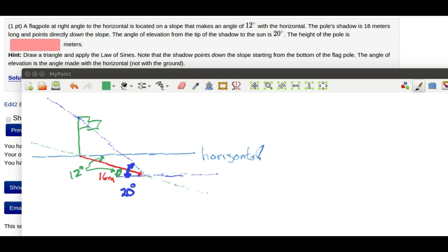You see, that horizontal will be parallel to this horizontal, and so the ground is a transversal and the alternate interior angles will have to be equal. So this is going to be 12 degrees. That means that this angle is going to have to be 8 degrees because there's 20 degrees here and there's 12 degrees here. So the 12 plus the 8 would be the 20.